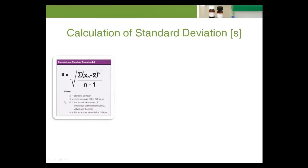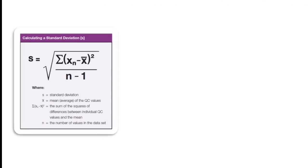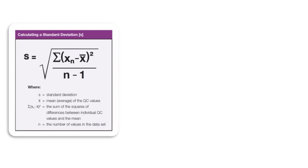So how do you calculate a standard deviation? You'll need to determine the mean or average of the QC values. You'll also need the sum of the squares of differences between individual QC values and the mean. Finally, you'll need the number of values in the dataset.